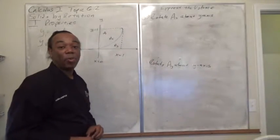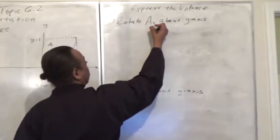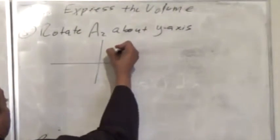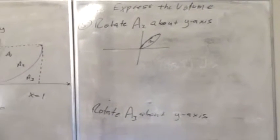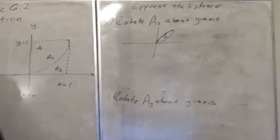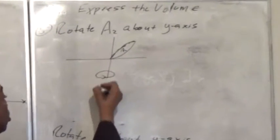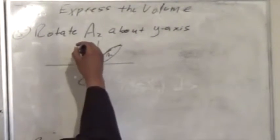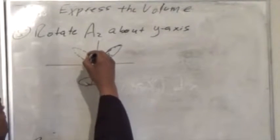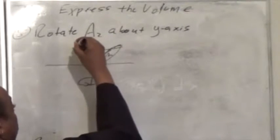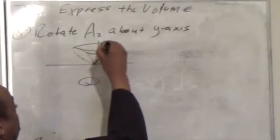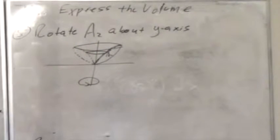Next, we want to rotate A2 about the y-axis. There's A2, which is right here, and we're going to rotate that about the y-axis. So let's create an image, and then the illusion of rotation.